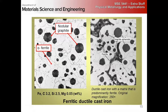For the ferritic structure, you do additional heat treatments to force all the pearlite to decompose into graphite and ferrite, giving you these nice large nodular graphite nodules. Here you can see some retained pearlite.